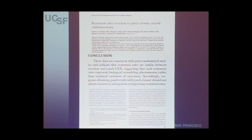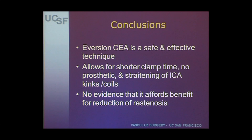Surgeons should choose the procedure they're most comfortable with and have the ability to get a good result. Neither procedure will give a superior result simply because of the type of procedure. In conclusion, eversion endarterectomy is a safe and effective technique. It allows for shorter clamp time, does not require a prosthetic in the neck, and is useful for straightening a kinked internal carotid artery. However, there is no evidence that it affords benefit for reduction of re-stenosis.